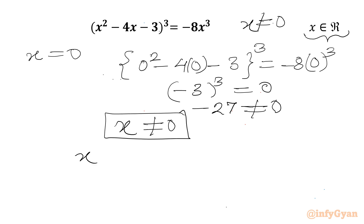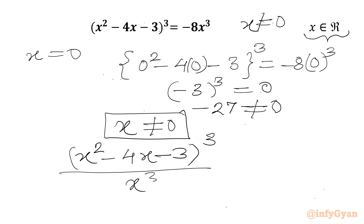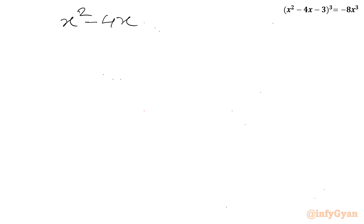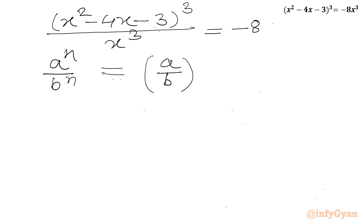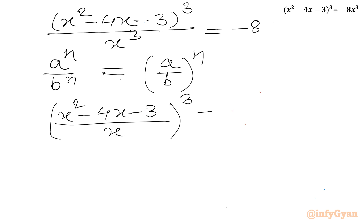Now I will divide both sides by x³. We get (x² - 4x - 3)³ / x³ = -8x³ / x³, so (x² - 4x - 3)³ / x³ = -8. Using the exponent property aⁿ/bⁿ = (a/b)ⁿ, I can write ((x² - 4x - 3) / x)³ = -8.